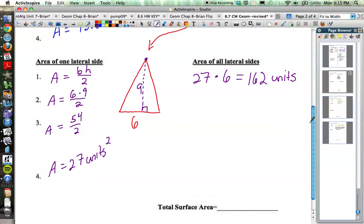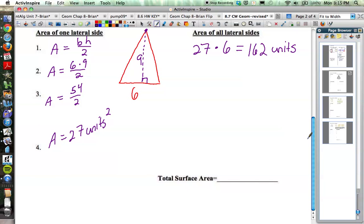So our grand total area then, we have our area of our base, which was 93.6, plus the area of all the lateral sides, which were 162. And if we add those together, we get 255.6 square units.